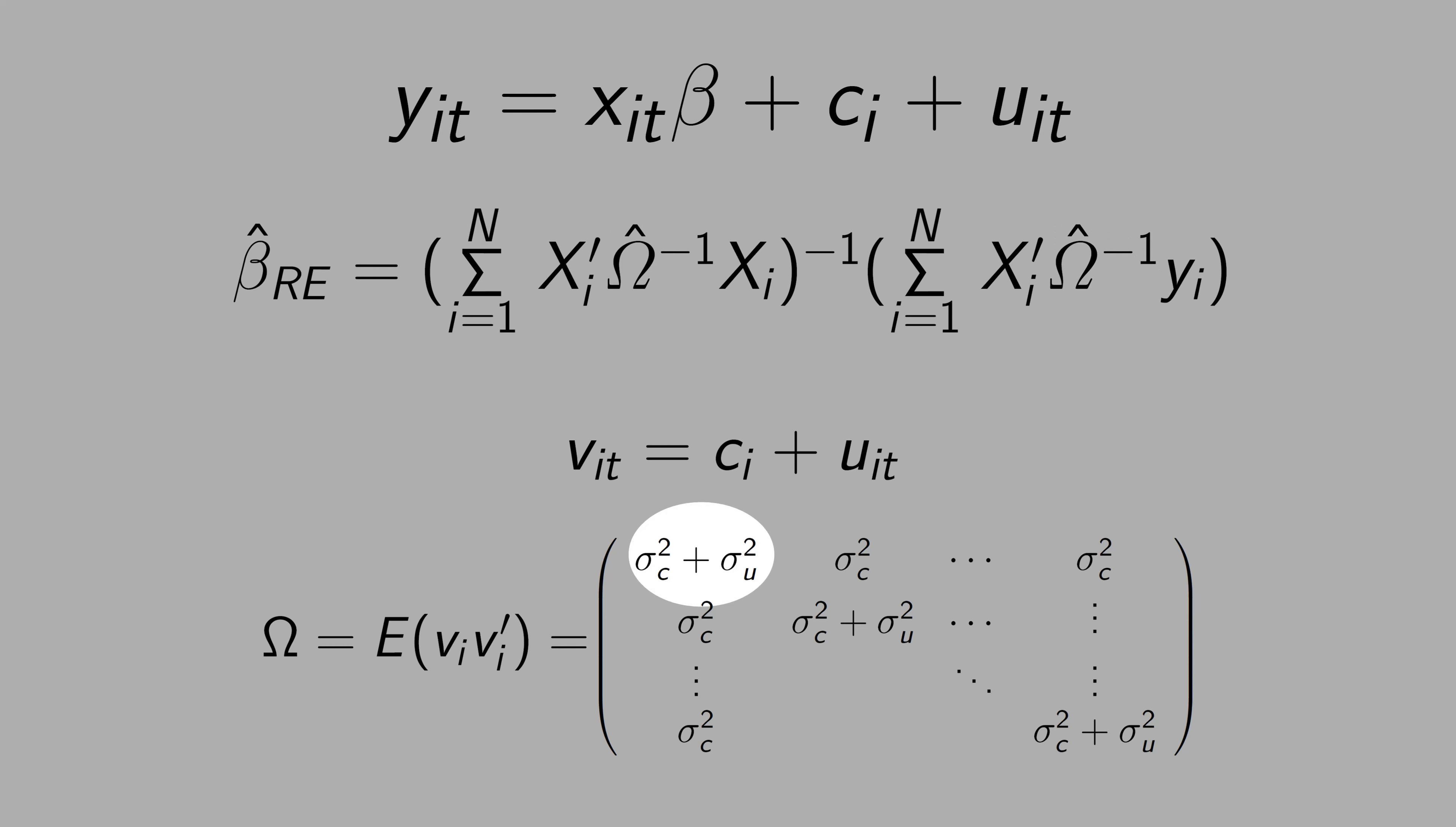See that in the diagonal, we have the variance of C and the variance of U, and see that there is no covariance term here. That means we assume that C and U are independent, and in the off-diagonal, we have that the covariance is the variance of C.